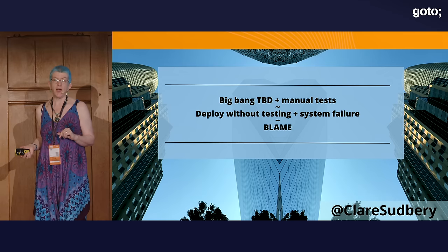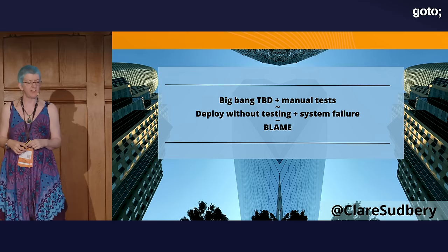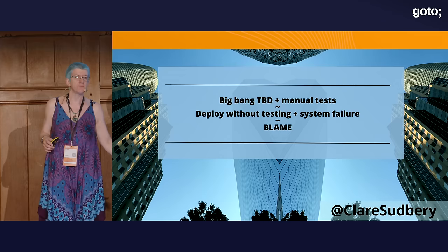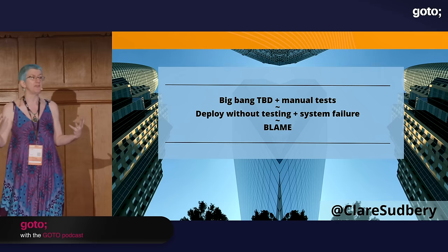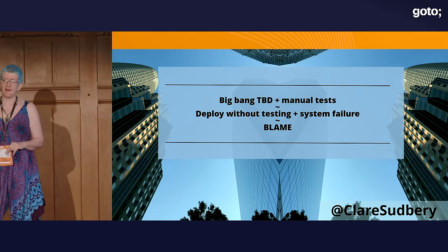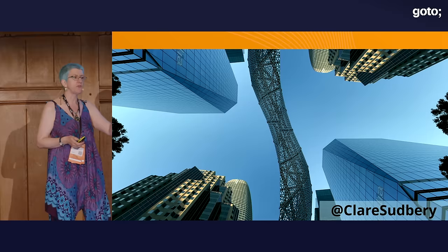Because they've got manual tests but they're trying to do trunk-based development and continuous delivery, they say: those tests were just nice to have — we'll just deploy anyway. They deploy without tests, and everything blows up. There's a big system failure, a lot of people asking questions, and a lot of people getting blamed. You've broken our product. The whole site has gone down. What on earth are you playing at?